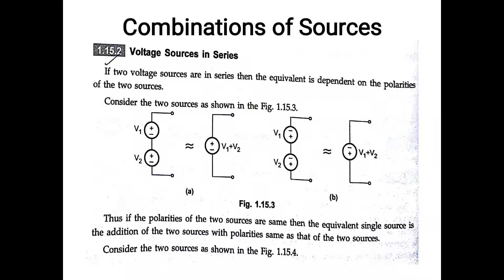Next, the combination of sources. If two voltage sources V1 and V2 are in series with the same polarity (both plus-minus in the same direction), they combine by addition. Plus-minus, plus-minus gives V1 plus V2. If the direction is the same, the final voltage is V1 plus V2. Thus, if the polarities of two series sources are the same, the equivalent single source is the addition of the two sources.